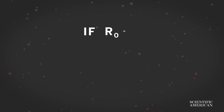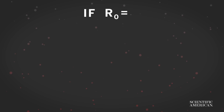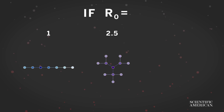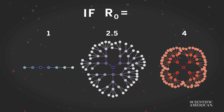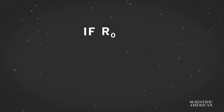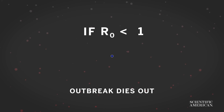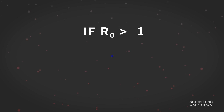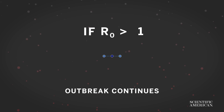In general, the higher the R-naught, the more infectious the disease. And the value of one is important when it comes to the R-naught. An R-naught less than one means the outbreak will peter out, whereas an R-naught greater than one means the infection will continue to spread.